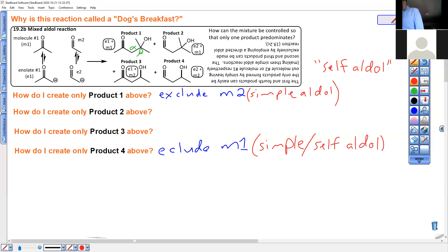We're going to focus the rest of this screen on how we can create products two and three reliably. Product two, we want to make sure that the enolate is created from molecule two. Molecule two needs to be deprotonated to make E2. And that will attack only molecule one. That's what would give this result.